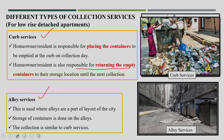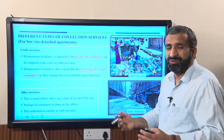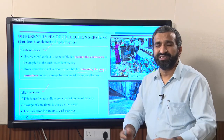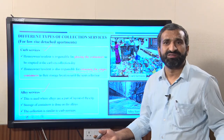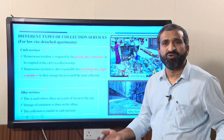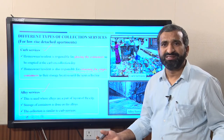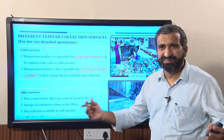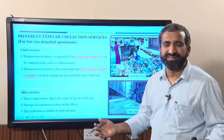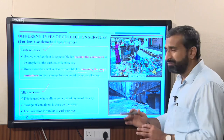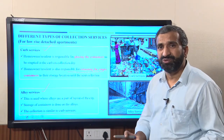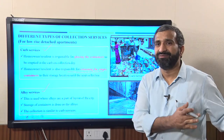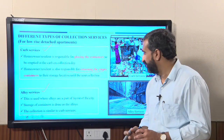In curb services, the corporation need not find many locations — maybe for one ward there could be one or two locations based on population, number of houses, and available space. These locations are finalized on main roads so that the vehicle can easily reach them and collect the waste to take to the disposal site or treatment facility.